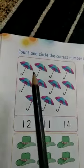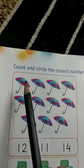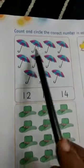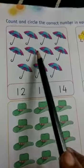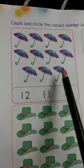This set has many umbrellas. Let's count. 1, 2, 3, 4, 5, 6, 7, 8, 9, 10, 11.